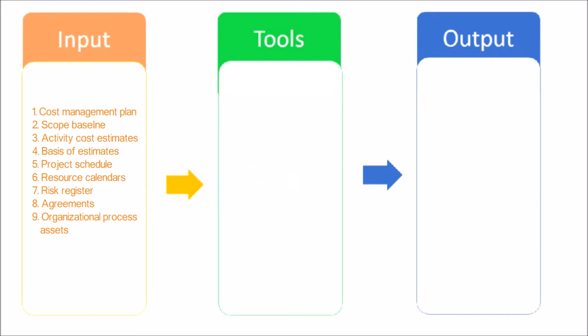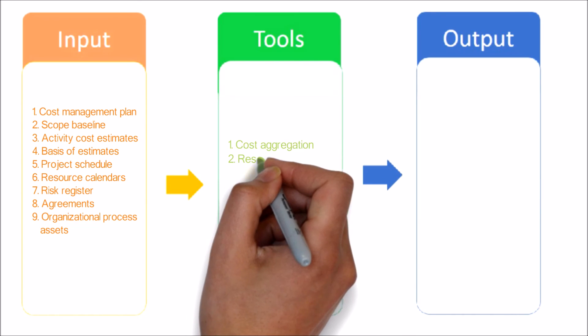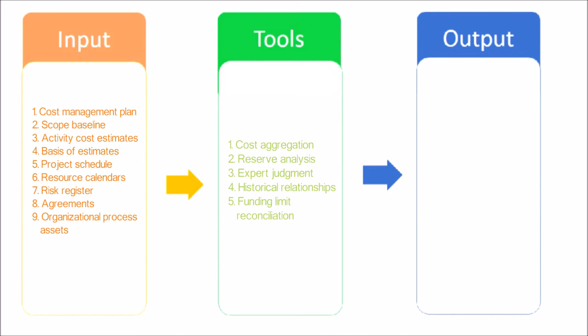Additional inputs include: Project Schedule, which includes planned start and finish dates for the project's activities, milestones, work packages, and control accounts; Resource Calendars, which provide information on which resources are assigned to the project and when they are assigned; Risk Register, which should be reviewed to consider how to aggregate the risk response costs; Agreements, where applicable agreement information and costs relating to products, services, or results that have been or will be purchased are included when determining the budget; and Organizational Process Assets.